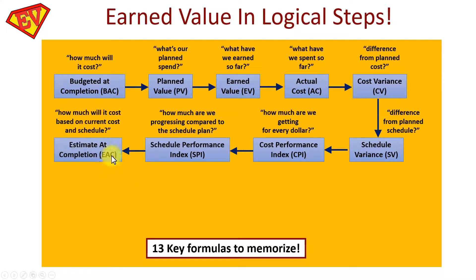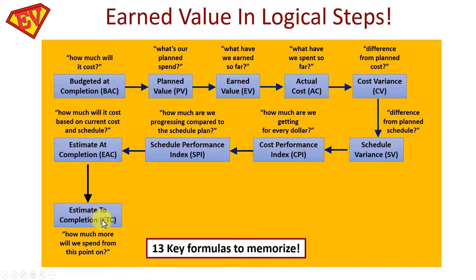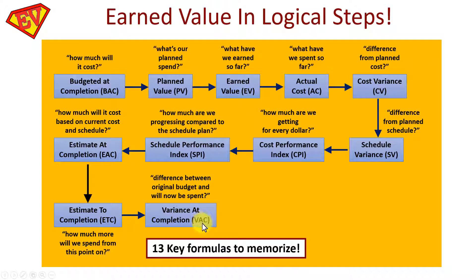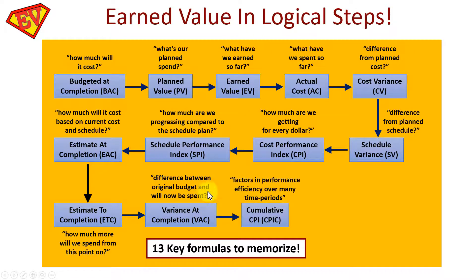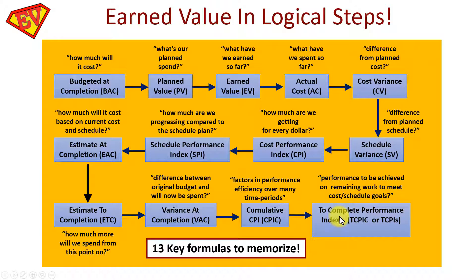Next is the Estimate at Completion (EAC): how much will it cost based on current cost and schedule — one of the first forecasts. Then the Estimate to Completion (ETC): how much will be spent from this point onwards. Then Variance at Completion (VAC): the difference between the original budget and what will now be spent. Next, Cumulative CPI factors in performance efficiency over many time periods. Finally, the To Complete Performance Index (TCPI) refers to the level of performance needed on remaining work to meet cost or schedule goals.